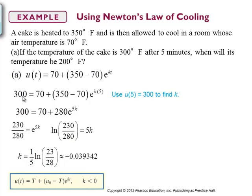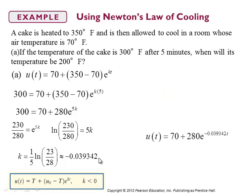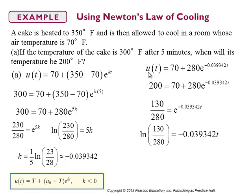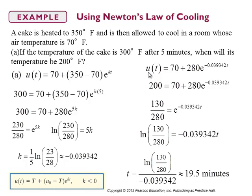Doing the algebra to solve for k gives k ≈ −0.039342. Note that 350 − 70 = 280. Now to answer when the temperature will be 200°F, we replace U by 200 and solve for T. That works out to T ≈ 19.5 minutes.